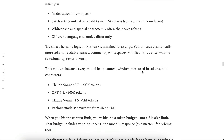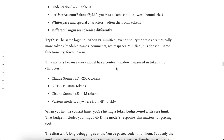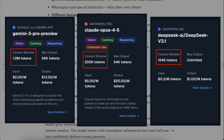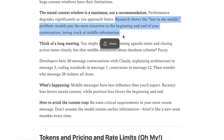There's one more important parameter for all AI models: the context window size. The context window is like the AI's short-term memory — it's the limit of how much information the model can keep in mind at once. Everything you say, every word, sentence, or code block takes up space in this memory, and that space is measured in tokens. Different AI models come with different context window sizes. For example, the latest Gemini models support up to 1 million tokens, Claude Opus 4.5 can handle 200,000 tokens, and DeepSeek models come in at 164,000 tokens. Having a larger context window doesn't necessarily make the model better — it just means it can take in more information at once. In fact, for many models, performance can start to drop when the context window gets more than half or about 75% full. Research shows that AI has a 'lost in the middle' problem: models pay the most attention to the beginning and end of your conversation, losing track of information in the middle — which is ironically very similar to how we remember things.